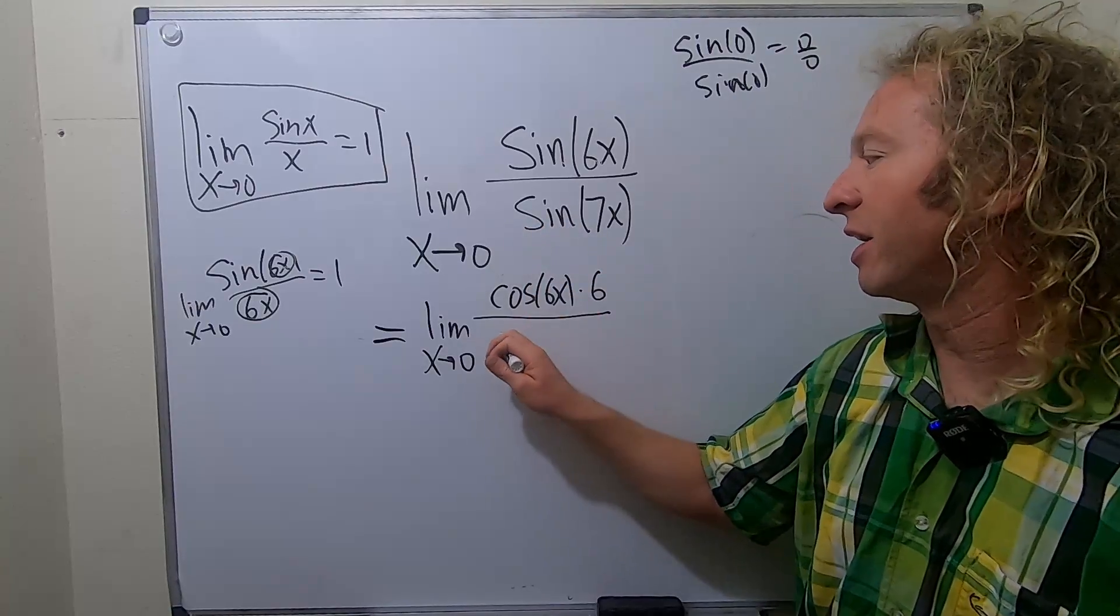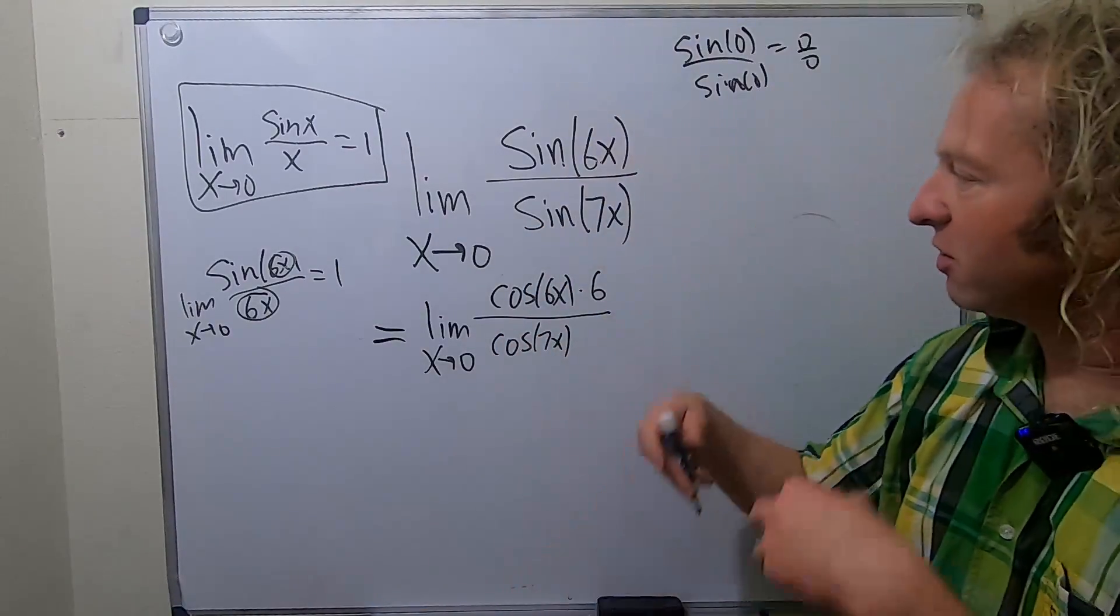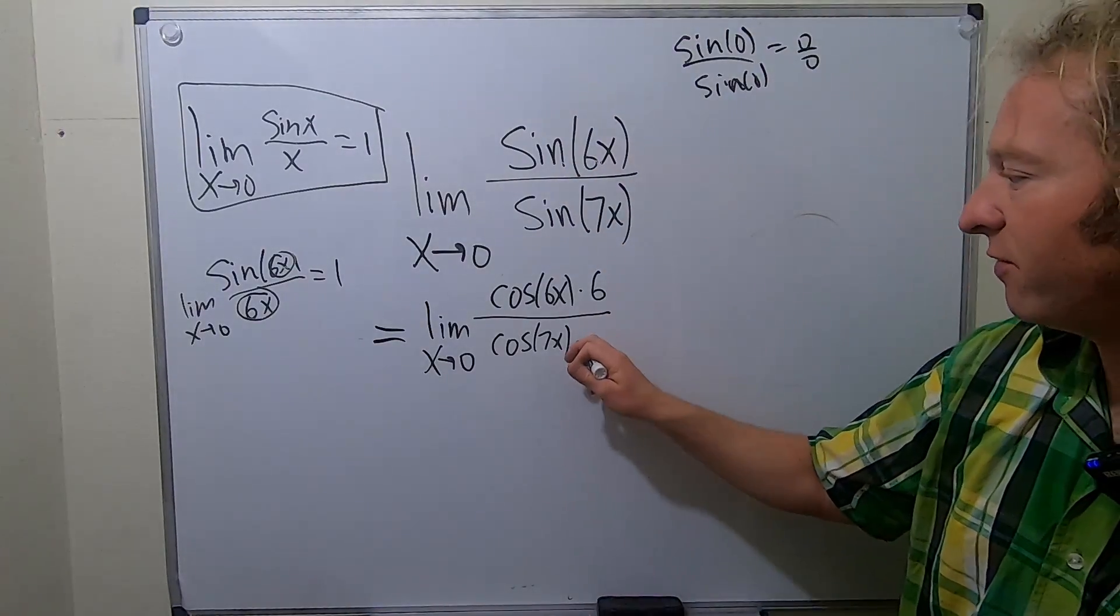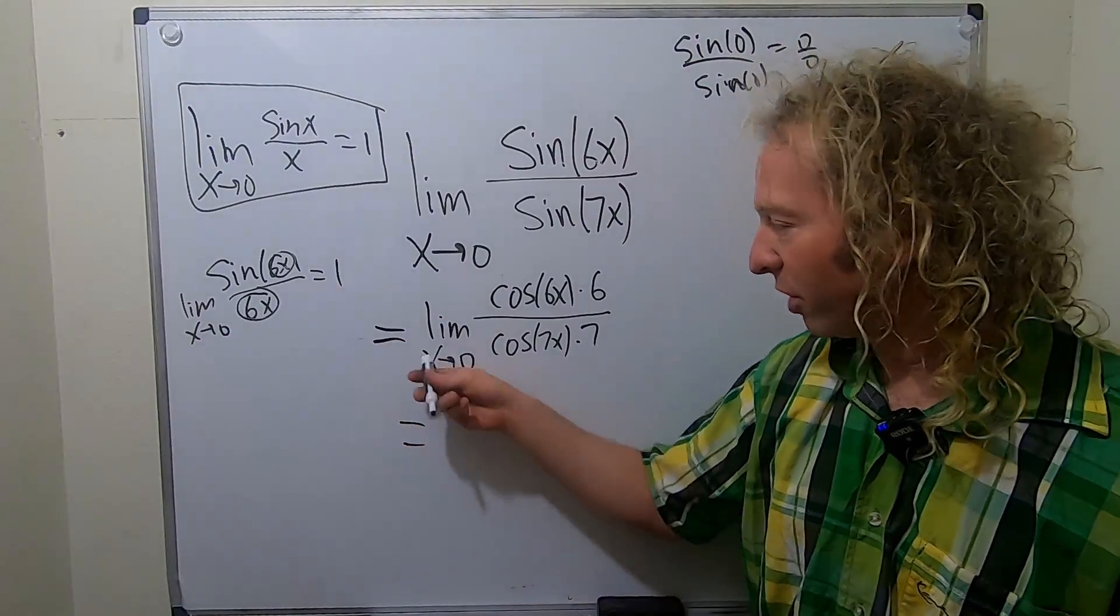And then cosine 7x, same thing. Derivative of sine is cosine. Here it's sine of 7x. So it's cosine of 7x times the derivative of the inside, which is 7. So now you can plug in the 0.